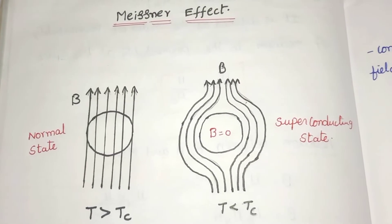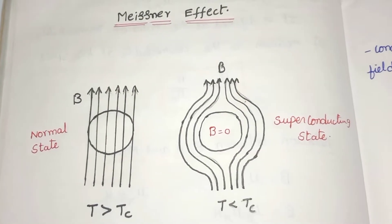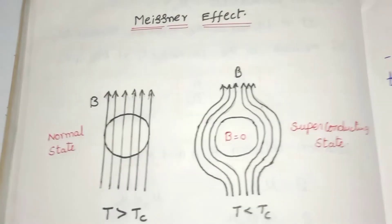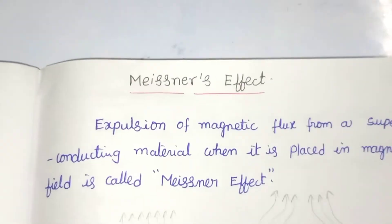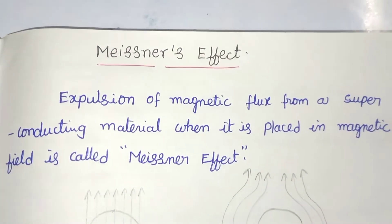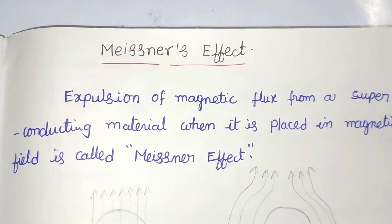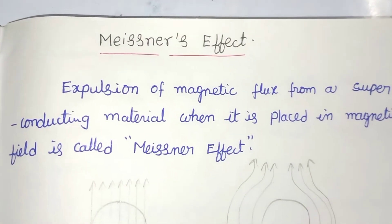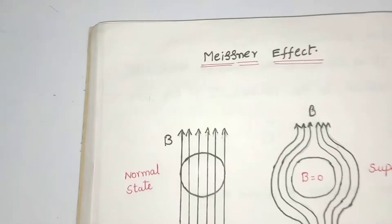Hi students, next topic: superconductors lesson — the Meissner effect. The expulsion of magnetic flux from a superconducting material when it is placed in a magnetic field is called the Meissner effect.